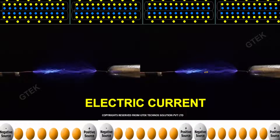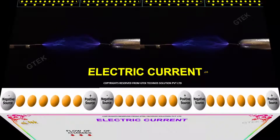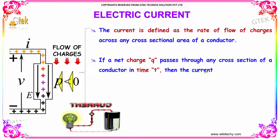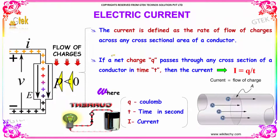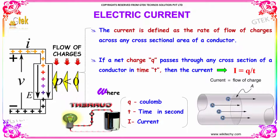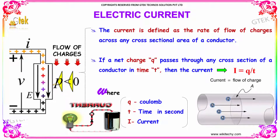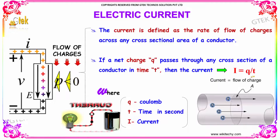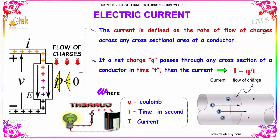Now we will see more detail on electric current. The current is defined as the rate of flow of charges across any cross-sectional area of a conductor. If a net charge Q passes through any cross-section of a conductor in a time T, then the current is given as I = Q/T, where Q is in Coulombs, T is in seconds, and I is the current.